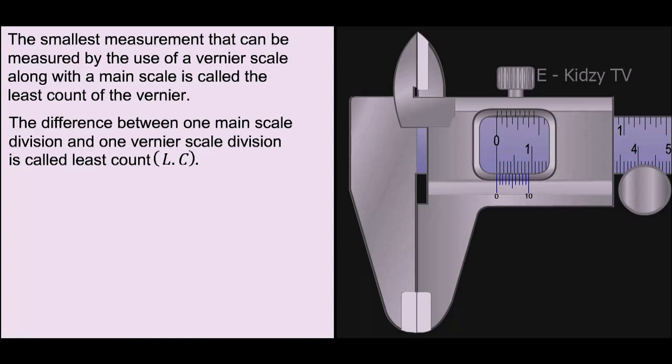Therefore, we have least count is equal to 1 main scale division minus 1 Vernier scale division.